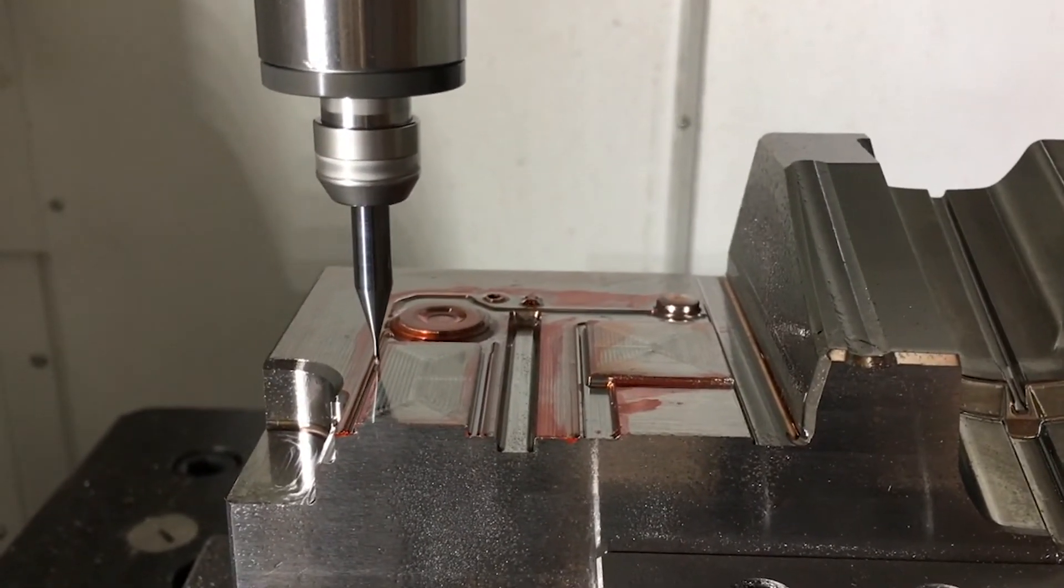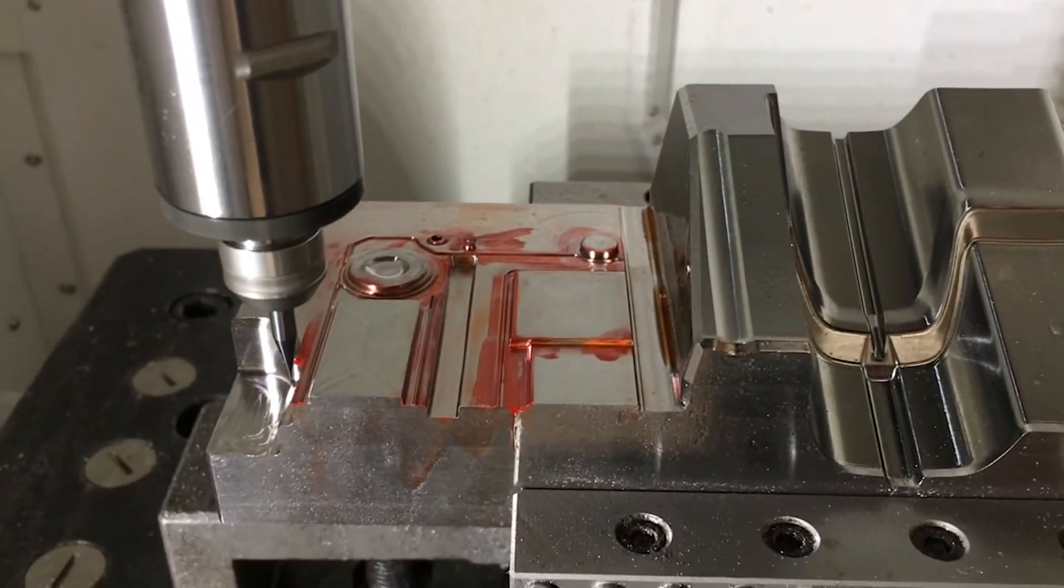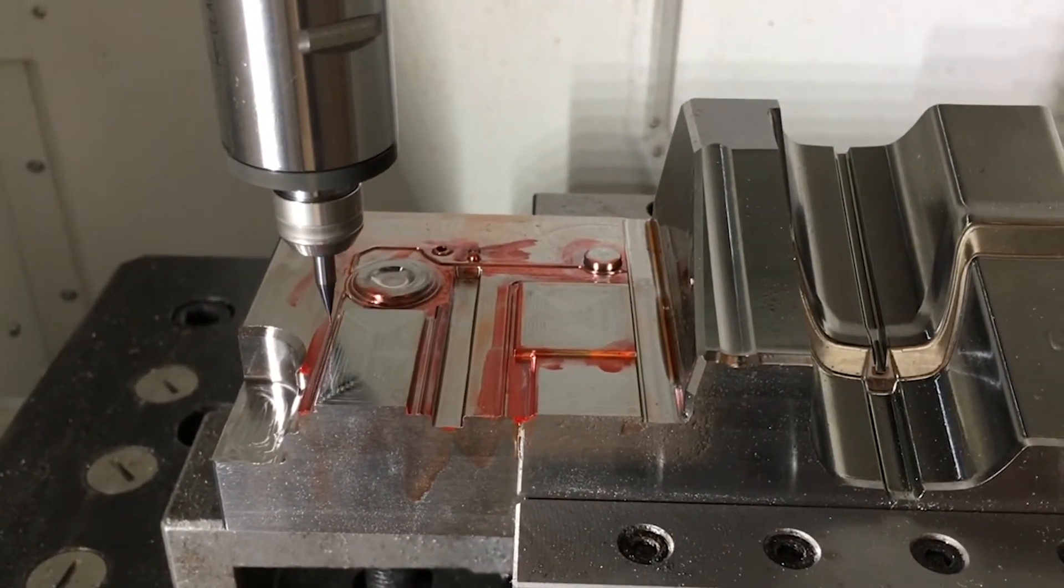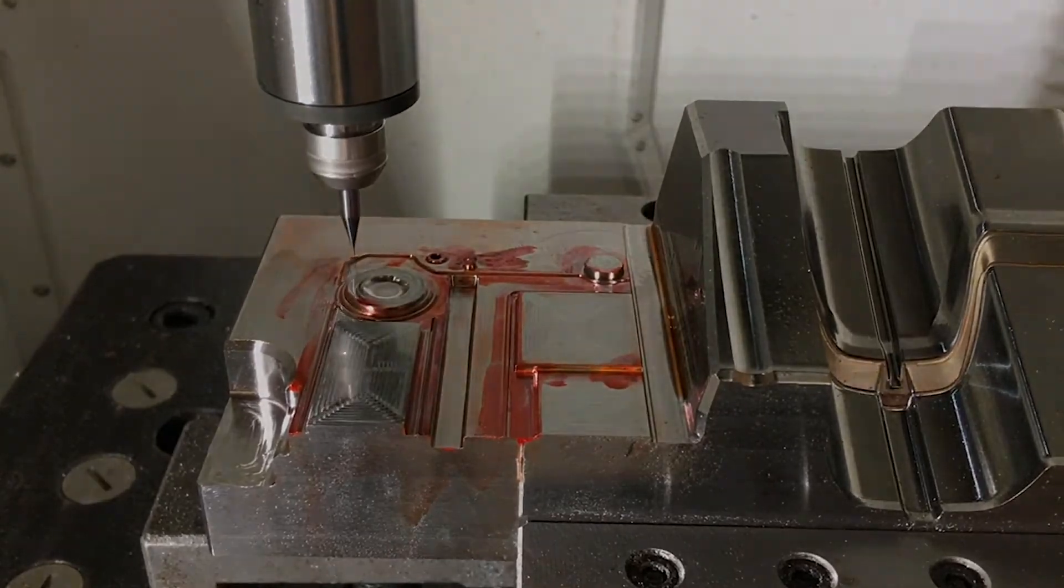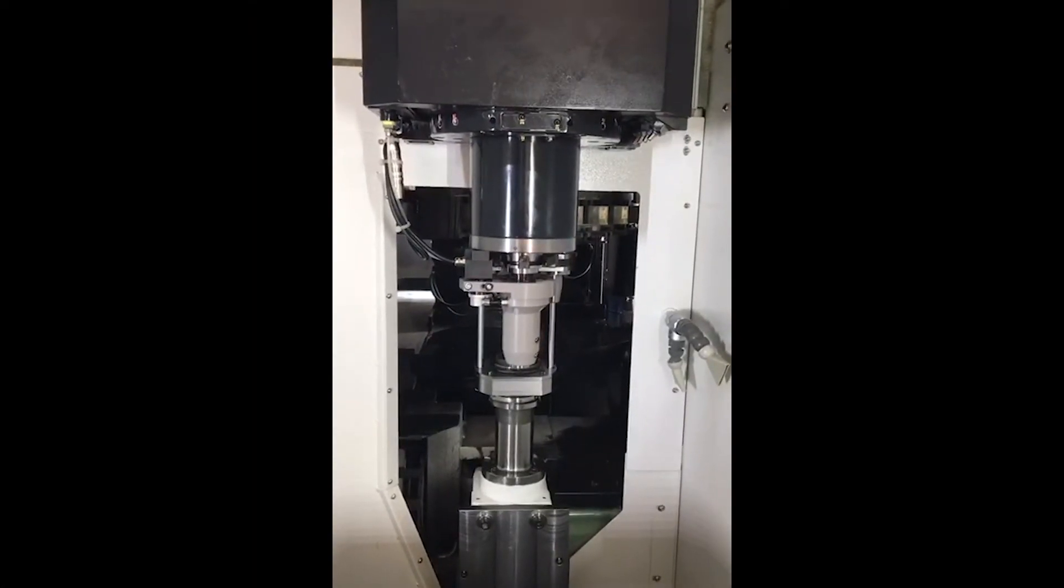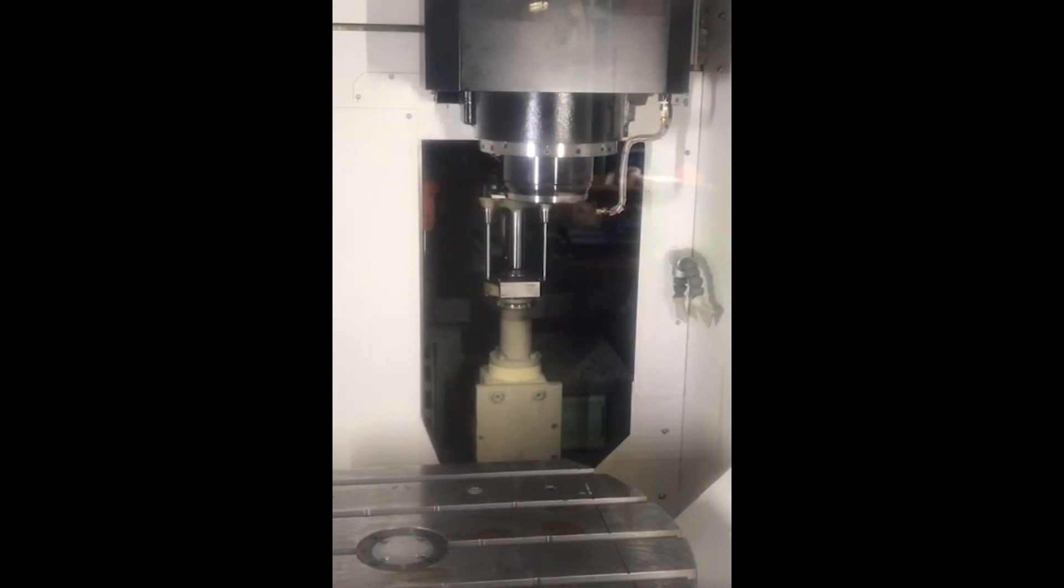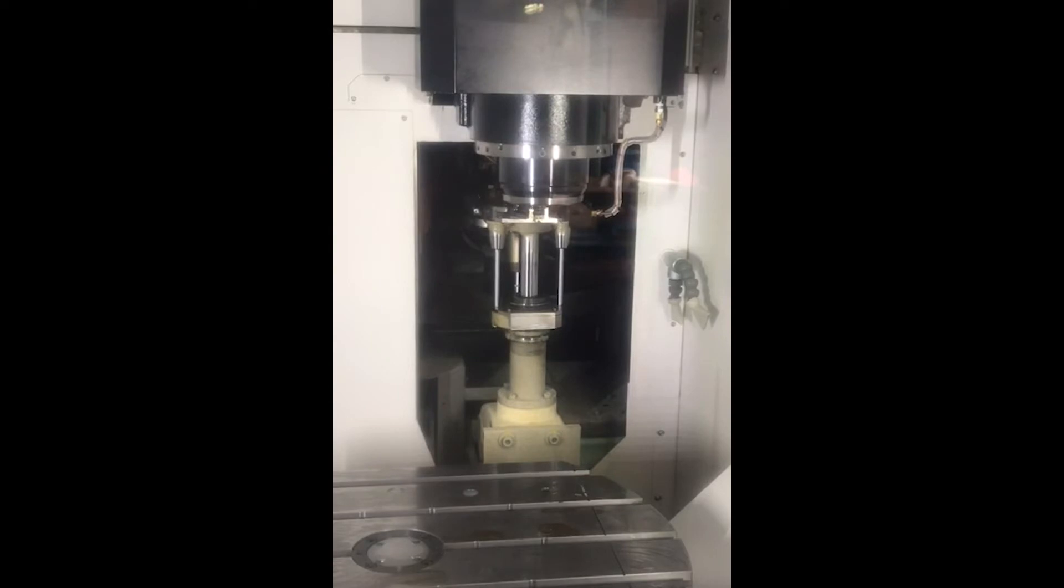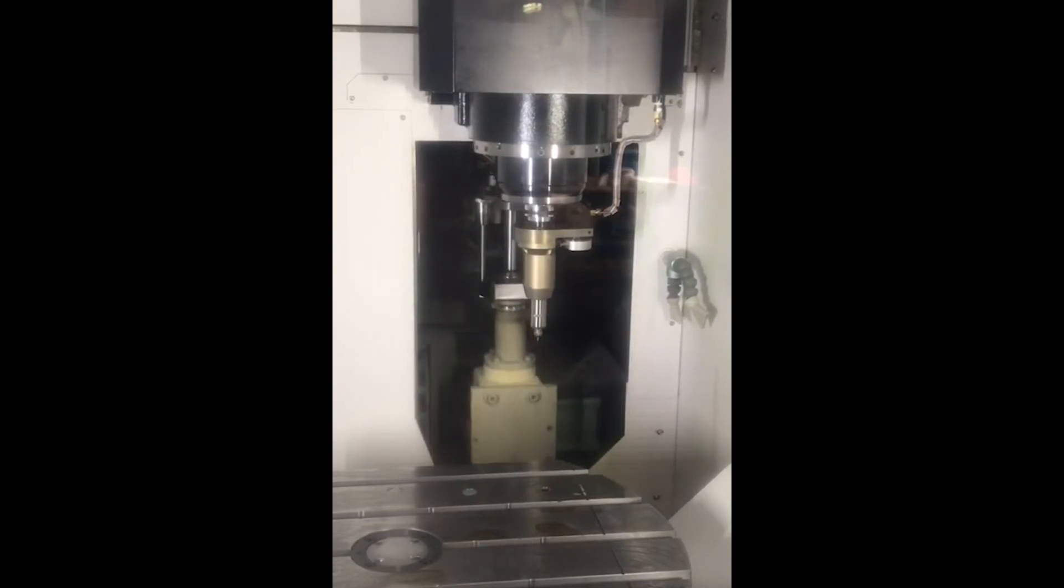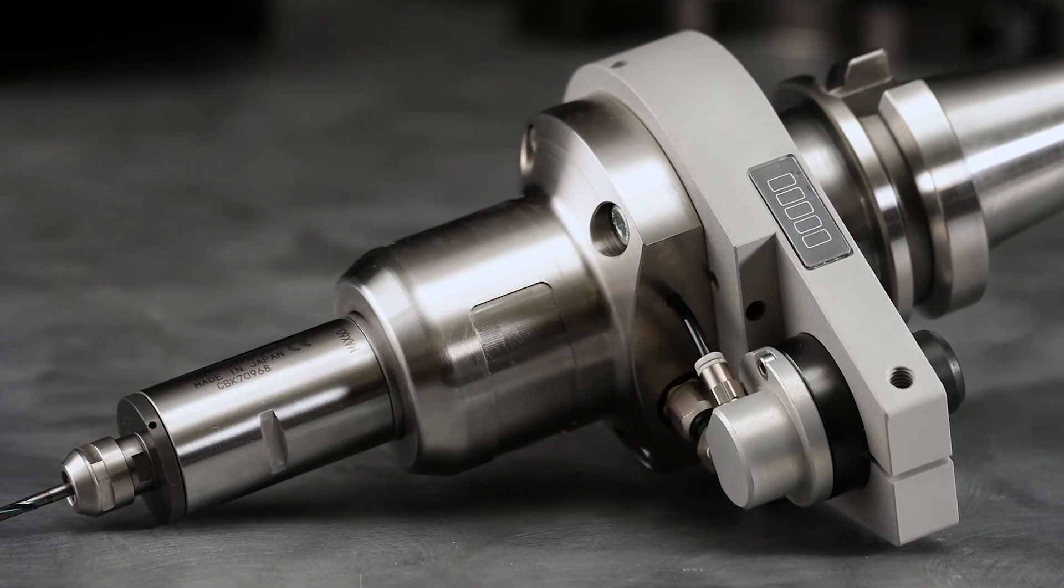Tools are getting smaller, so the need for higher and higher speeds is always there. The iSpeed 5 system allows zero operator intervention for hooking up cables and air lines. Customers can perform high-speed machining without having to connect or disconnect the motor in the spindle. This allows total lights-out 24-7 operation.